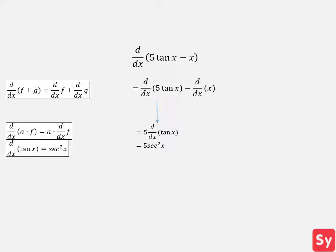Next we will compute the derivative of x. We can use the power rule and this equals 1. Now we can plug these derivatives back into the solution and we'll get 5 secant squared of x minus 1 as our answer.